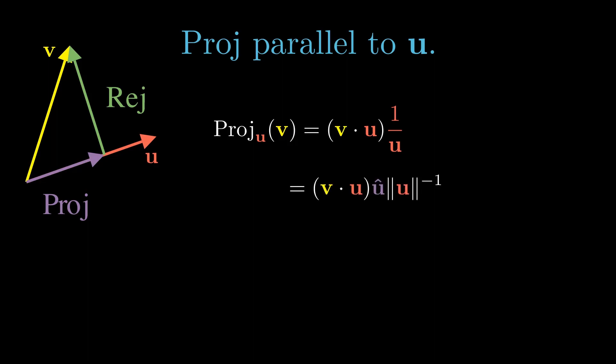After expanding u inverse as u hat divided by the length of u, we can distribute the length inverse into the dot product, leaving v dotted with u hat all times u hat. We've found the conventional vector algebra expression for the projection operator.